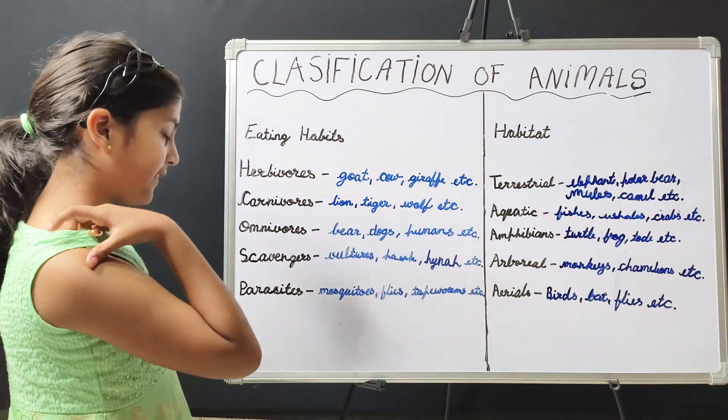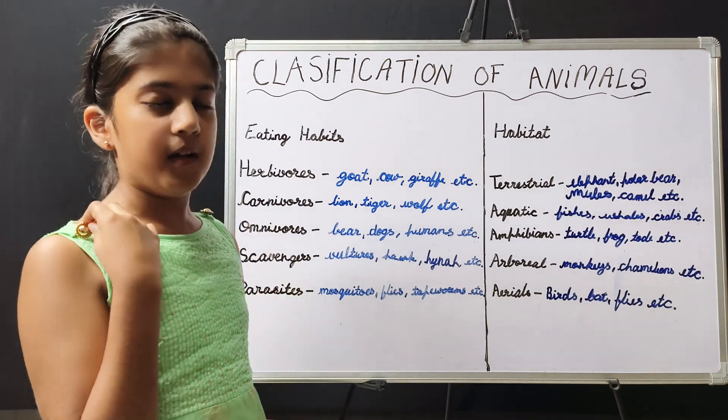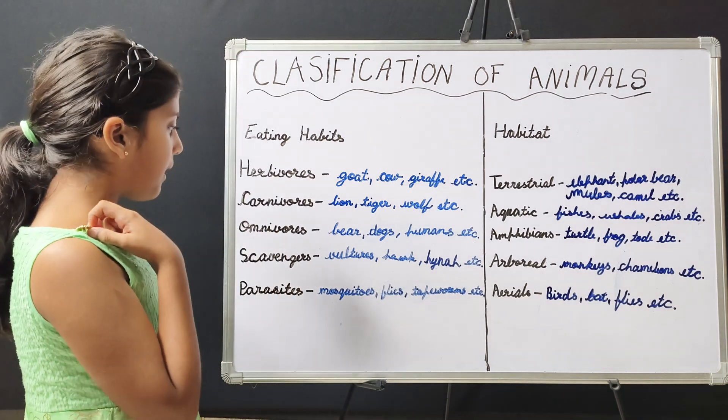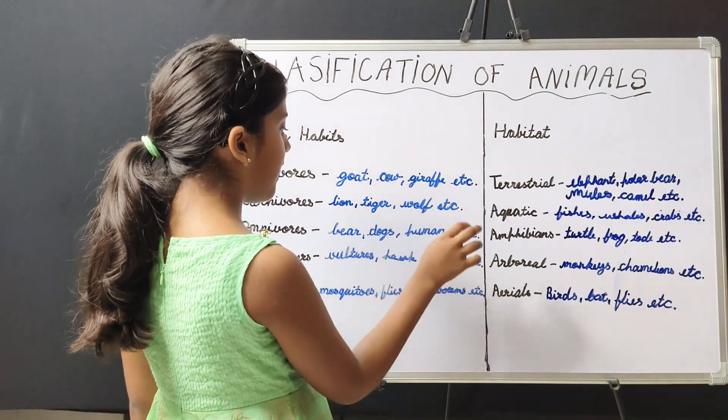Scavengers are those animals which eat dead animals. For example, vultures, hawk, hyena, etc.